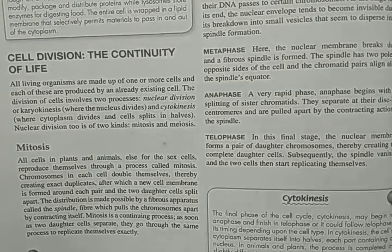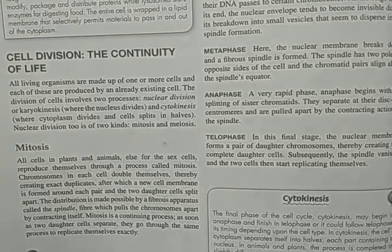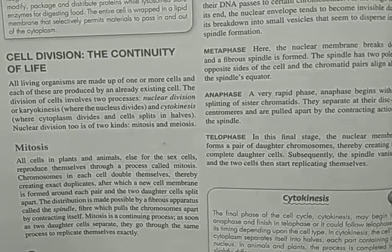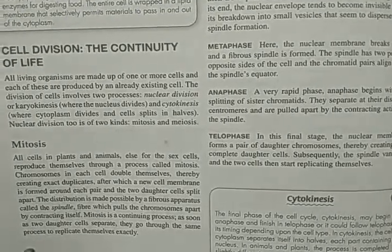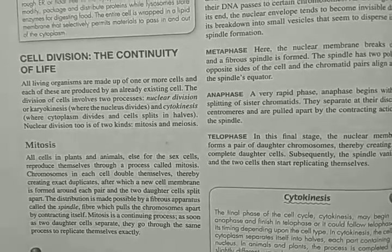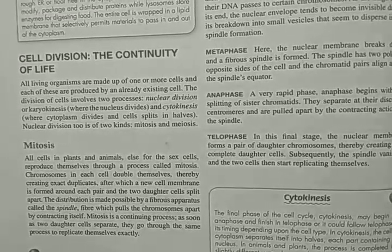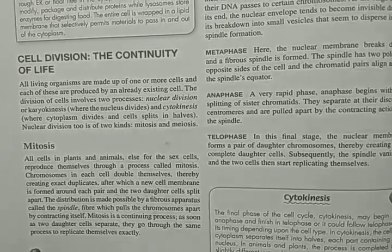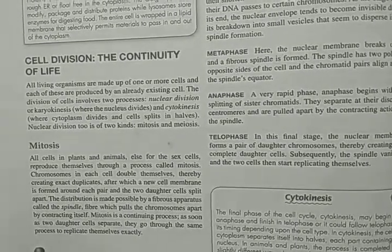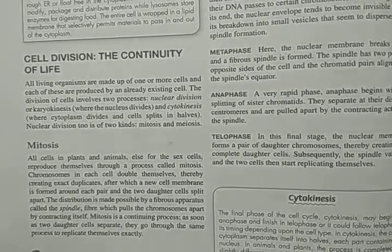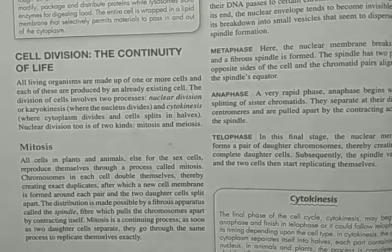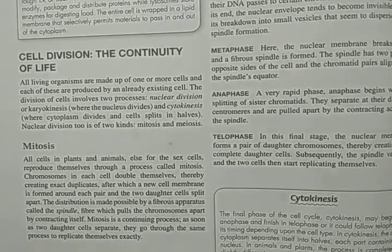Mitosis is a continuing process. As soon as two daughter cells separate, they go through the same process to replicate themselves exactly. Cell division in animals during mitosis can be divided into four stages: interphase, prophase, metaphase, anaphase, and telophase.